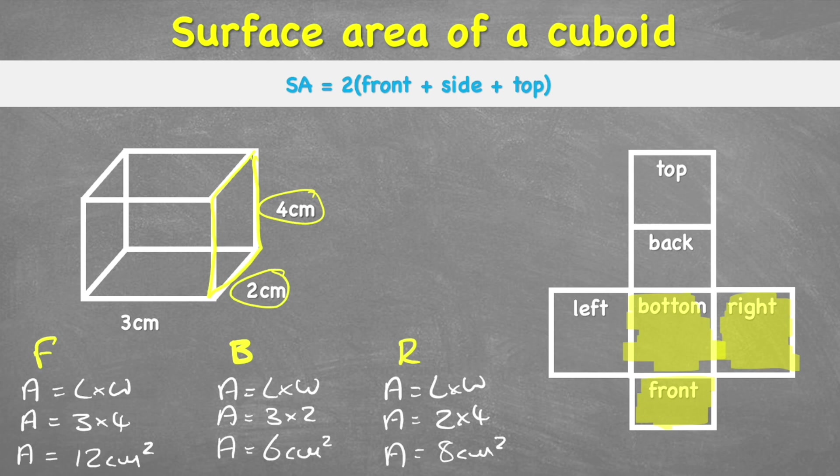But as we can see with our 2D net, we've only done half. We've still got the left, back, and top to do. But because they're identical to the ones we've already done, we can just multiply our total by 2. So let's find out what our total is.